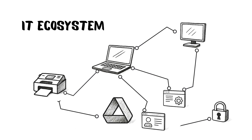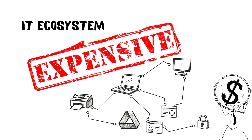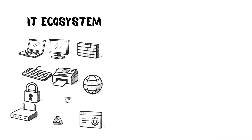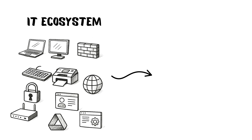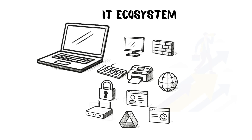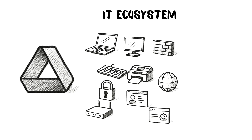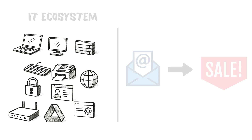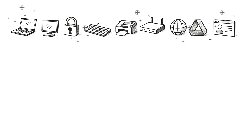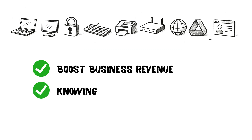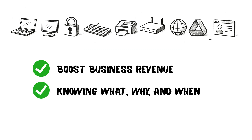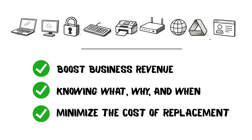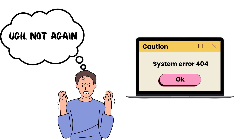Building an IT ecosystem for a business is just expensive. By IT ecosystem, we mean every single device and technology that keeps a business running — computers, software applications, networks — powering everything from emails to sales. The job is keeping these IT assets in top shape, maximizing their value to boost business revenue, and most importantly, knowing what, why, and when something is broken to minimize the cost of replacement or workflow disruption. No one ever wants to upset loyal customers with a broken system.